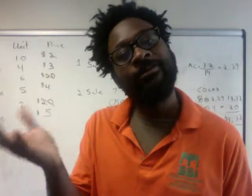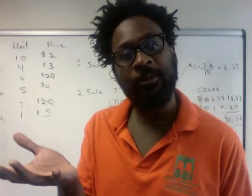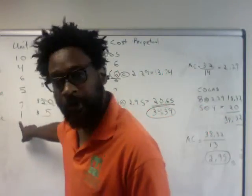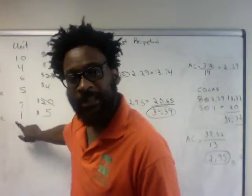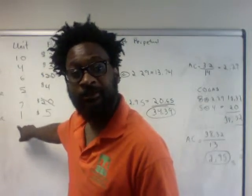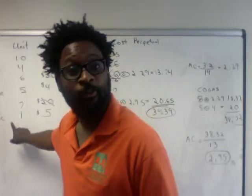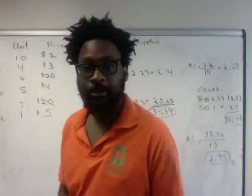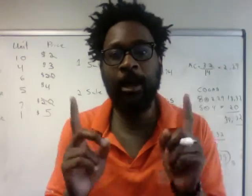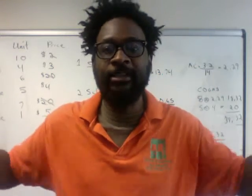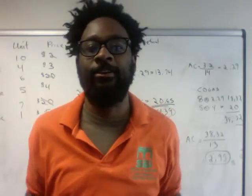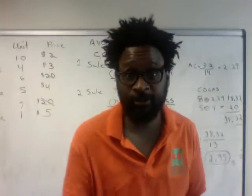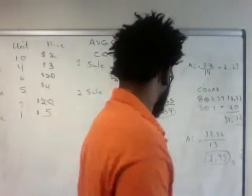But we have seven units total left. So where is the other one coming from? Some of you may have already pointed out the very last purchase — one unit at $5. So now we have two sets with different prices that we have to calculate the average cost for our ending inventory.